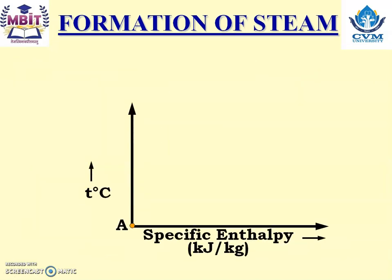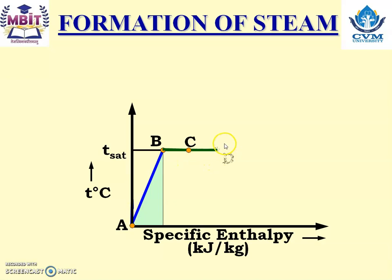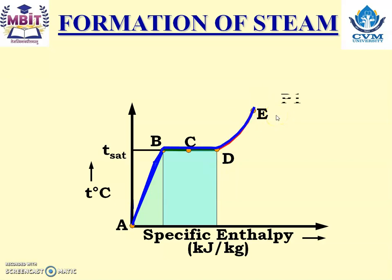This is the temperature versus specific enthalpy diagram of steam. A to B is the heating of water up to saturation temperature. B to C is up to wet steam. C to D is dry steam. At points B, C, and D, temperature remains constant — that is saturation temperature. If we continue to supply heat at point D, we get point E, which is superheated steam, for pressure P1.